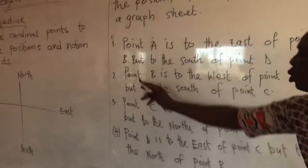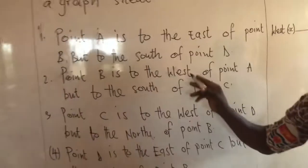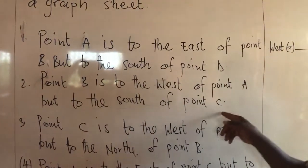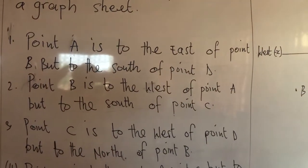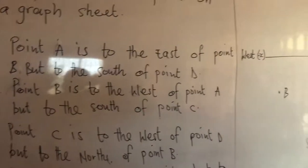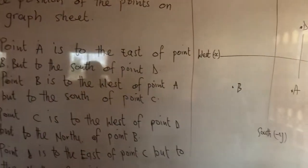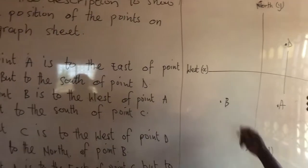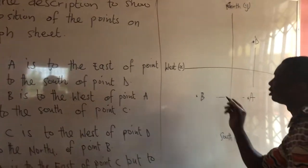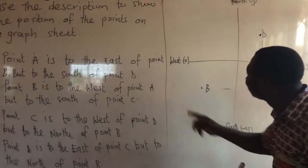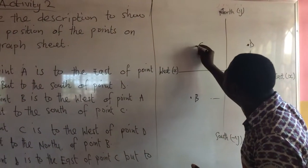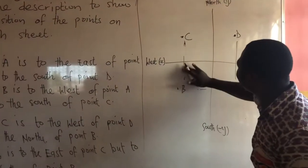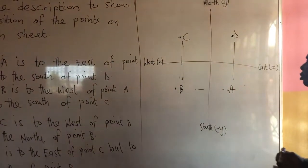Let's look at number two. Point B is to the west of point A, but to the south of point C. So, point B — we have point B already. It is to the west of point A, so it is there. You can see that it is there already. But to the south of point C, so I have to just indicate my C here. South — the downside of it is the south.